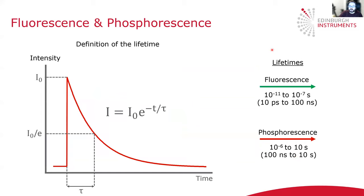Just a word on what I mean here by lifetime, for those of you not familiar with fluorescence and phosphorescence lifetimes. The lifetime here refers to the time it takes for a population with intensity I-naught to fall to I-naught over e. So the fluorescence or phosphorescence decay starts off with an initial intensity and then falls to that intensity divided by e, and the time it takes to do that is the lifetime.